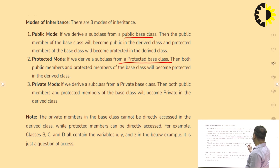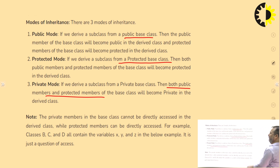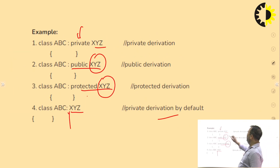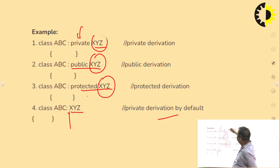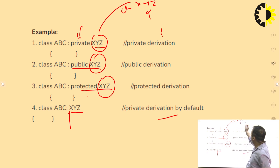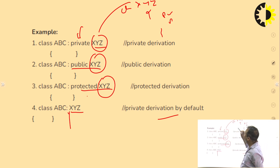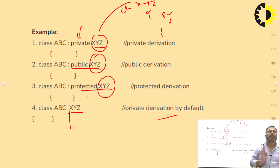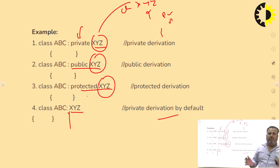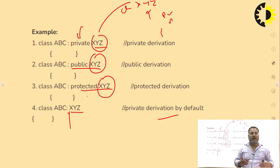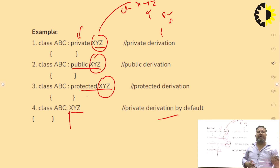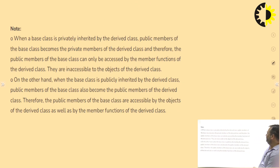In private mode: if you derive a subclass from a private base class, then both public and protected members of the base class will become private in the derived class. So for class ABC inheriting privately from XYZ, even if data in XYZ is public or protected, it all becomes private data of ABC. By this access specifier, we control how data of the base class becomes either private, public, or protected in the derived class.